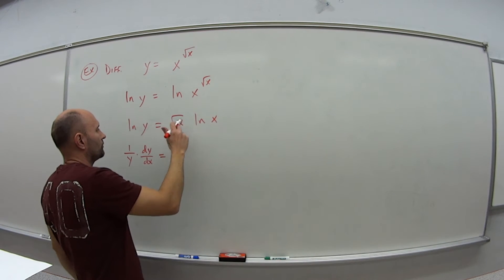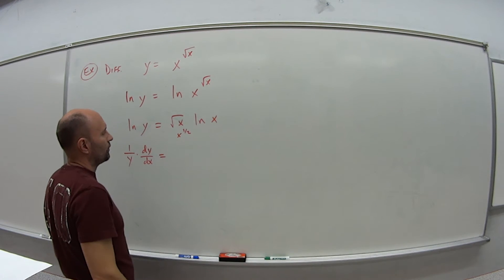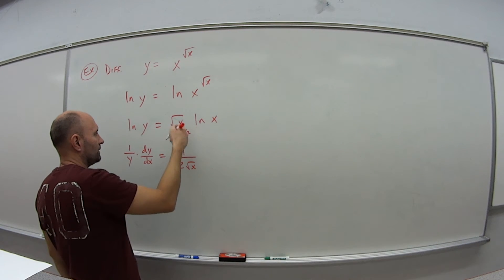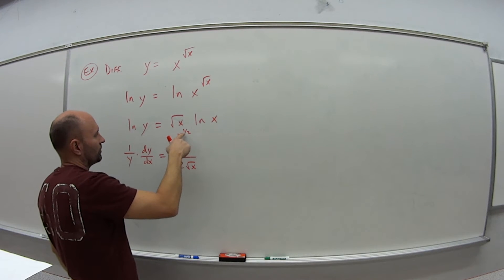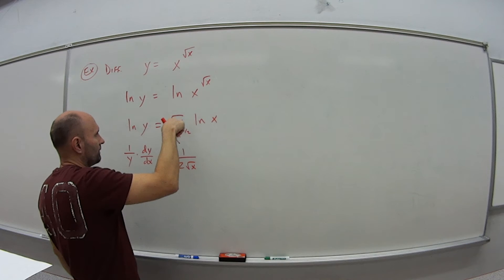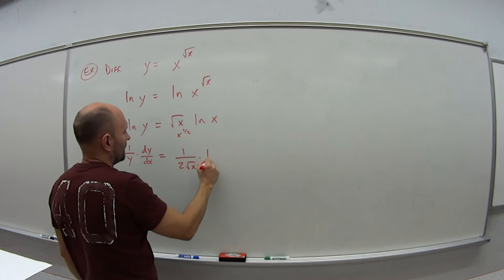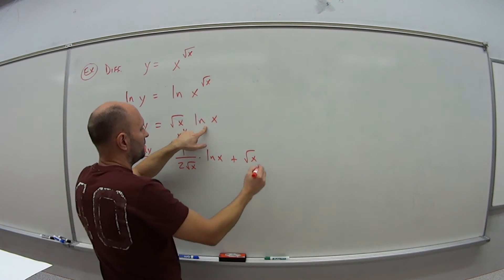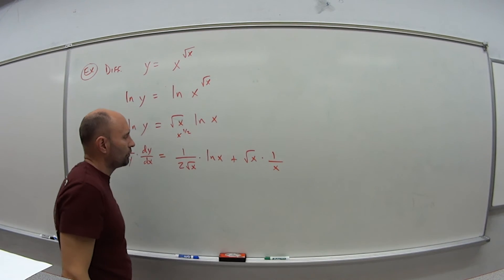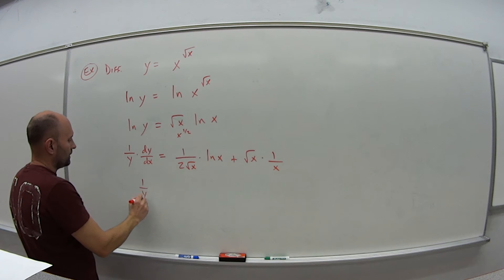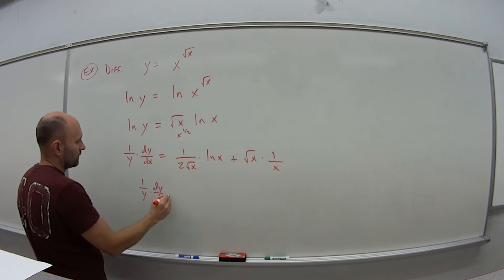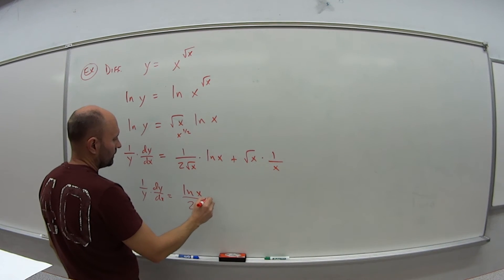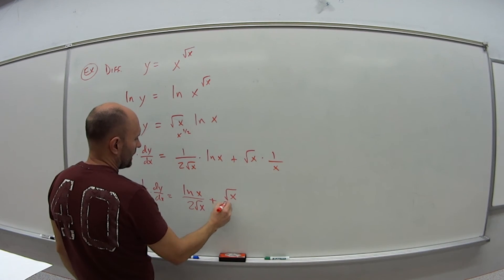Square root of x is x to the one half, and we've seen this before — its derivative is 1 over 2 square root of x. So the derivative of the first piece times the second gives us natural log of x over 2 square root of x, plus the first — square root of x — times the derivative of natural log of x, which is 1 over x. So 1 over y times dy/dx equals natural log of x over 2 square root of x plus square root of x over x.